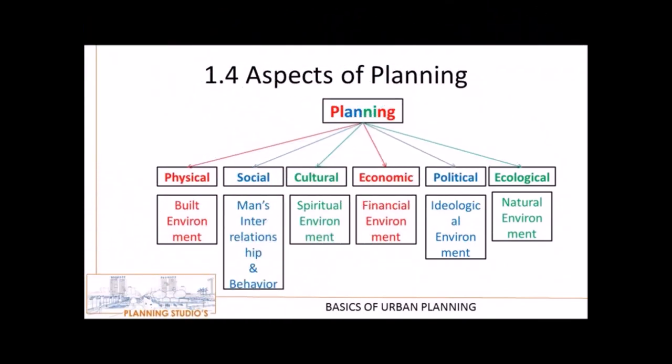These are the aspects of planning on which planning revolves. First is the physical aspect, which deals with the built environment. Second is social, dealing with interrelationship and behavior with surroundings. Third is cultural, dealing with the spiritual environment of any area. Fourth is economic, dealing with the financial environment. Fifth is political, dealing with the ideological environment that ensures stability of an area. Sixth and last is ecological, dealing with the natural environment around the area.